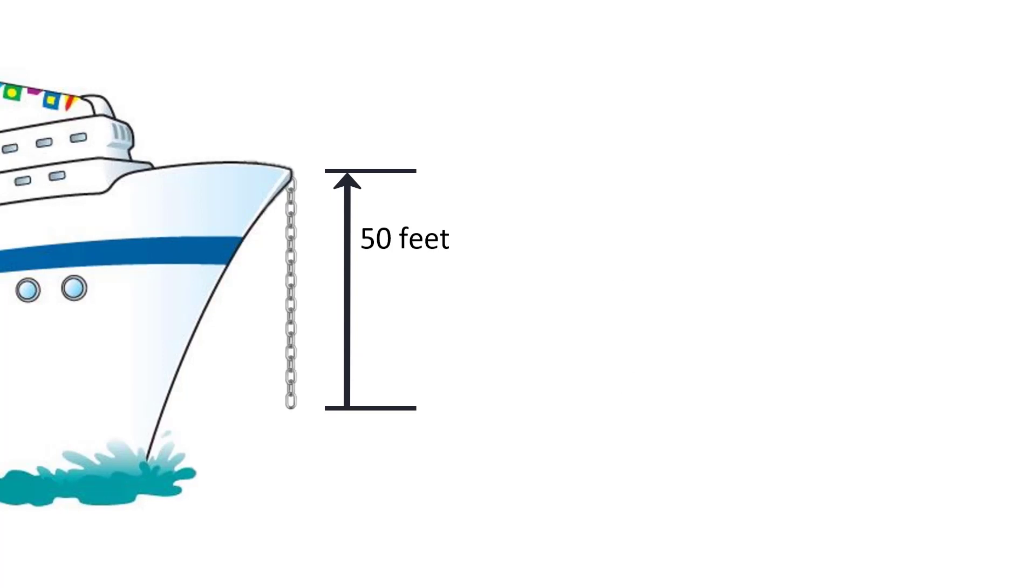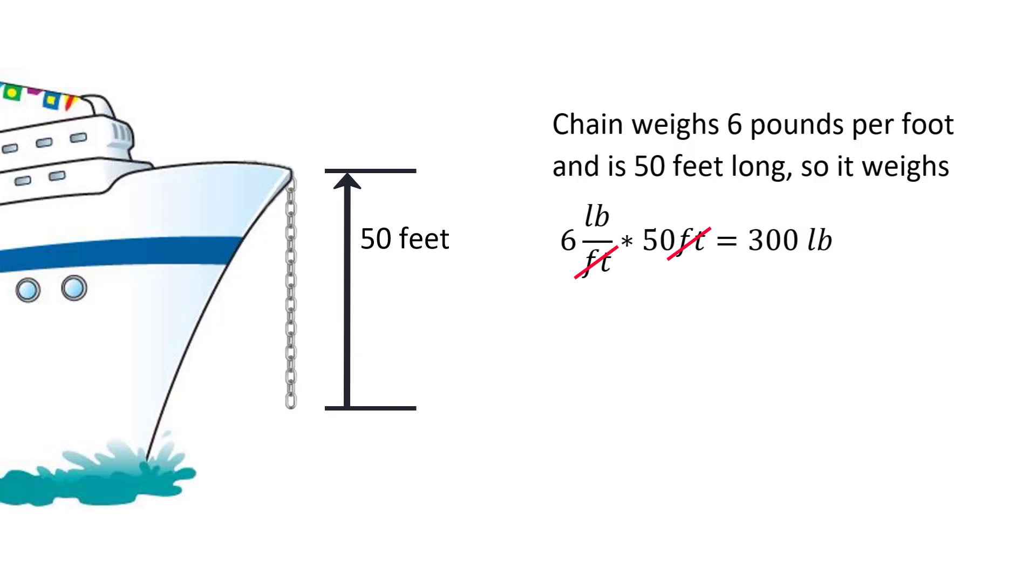But what about the chain that supports the anchor? How much work does it take to lift the chain? Suppose the chain weighs 6 pounds per foot. Then 50 feet of chain weighs 6 pounds per foot times 50 feet, which is 300 pounds.